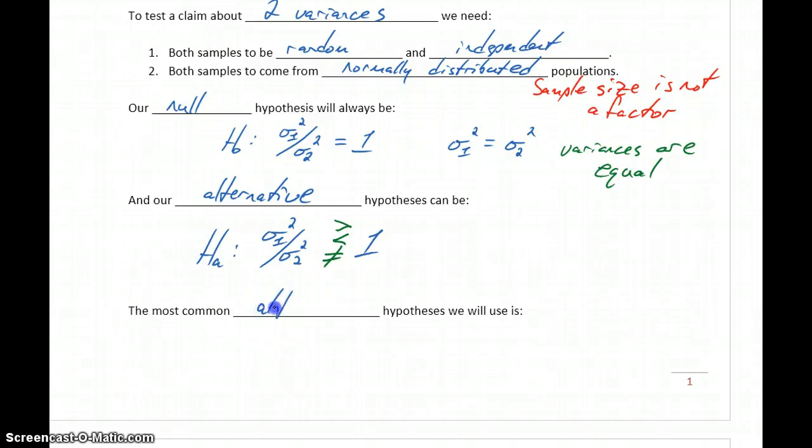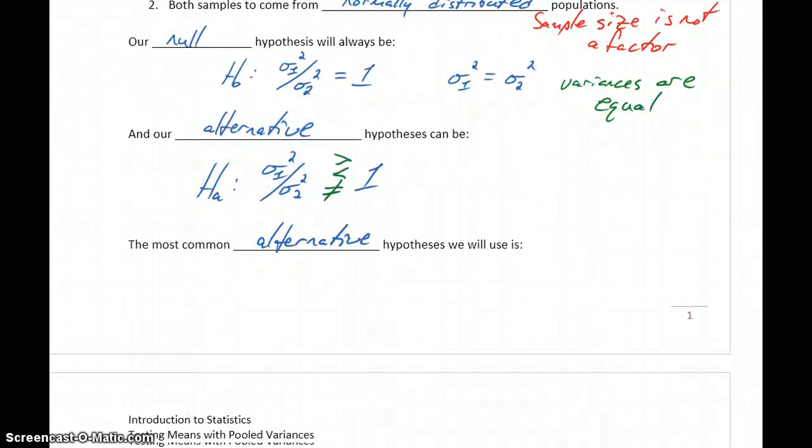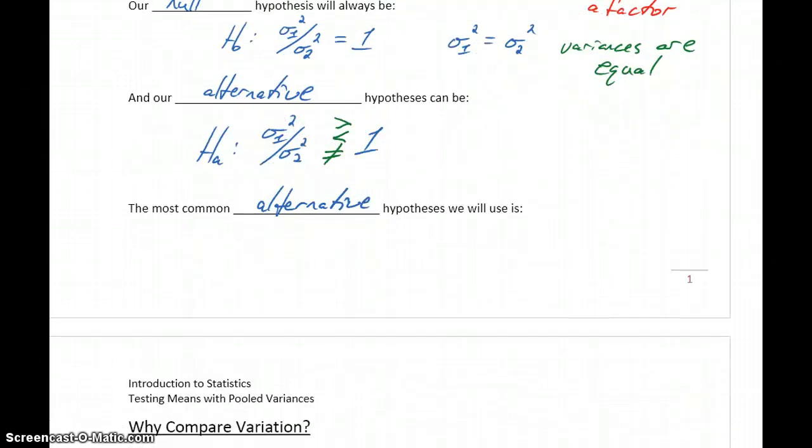Our most common alternative hypothesis—not the only one we'll use, but the one we'll typically see most often—will be that sigma squared one over sigma squared two is not equal to one. So the statement that the variances are somehow different from each other.